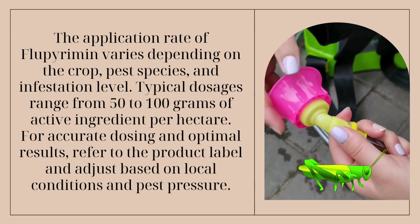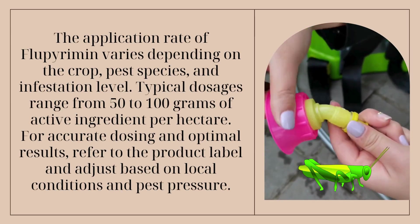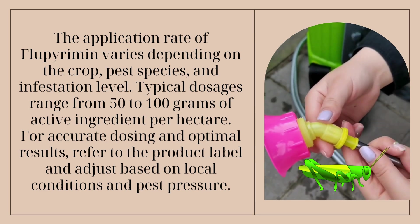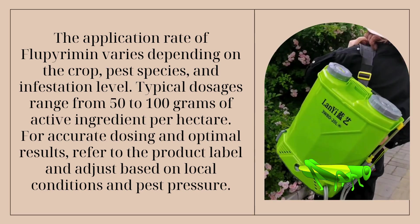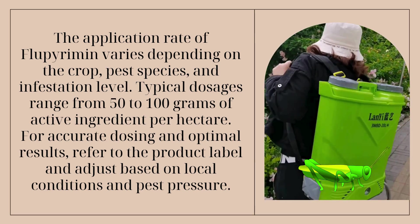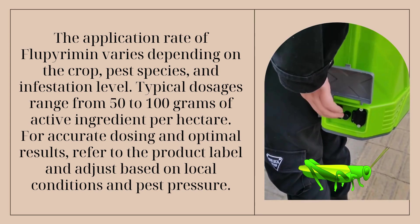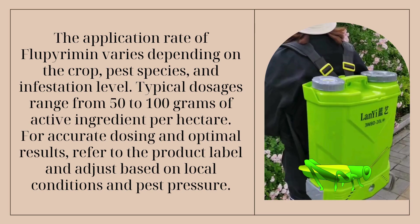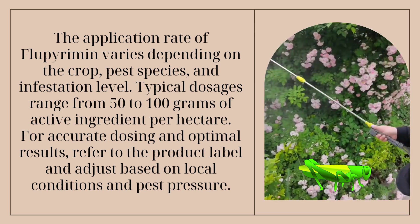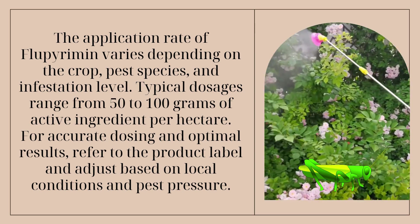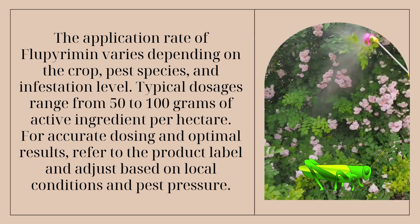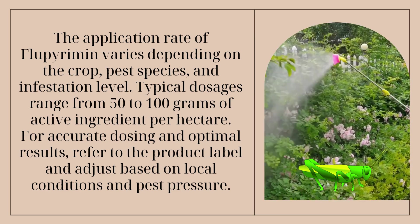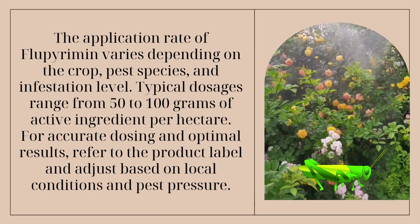Dosage: The application rate of Flupyrimine varies depending on the crop, pest species, and infestation level. Typical dosages range from 50 to 100 grams of active ingredient per hectare. For accurate dosing and optimal results, refer to the product label and adjust based on local conditions and pest pressure.